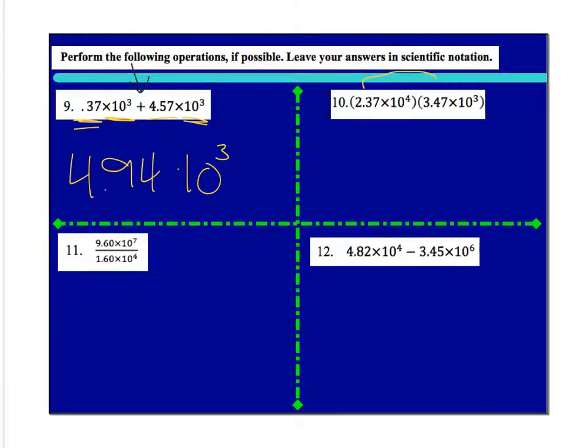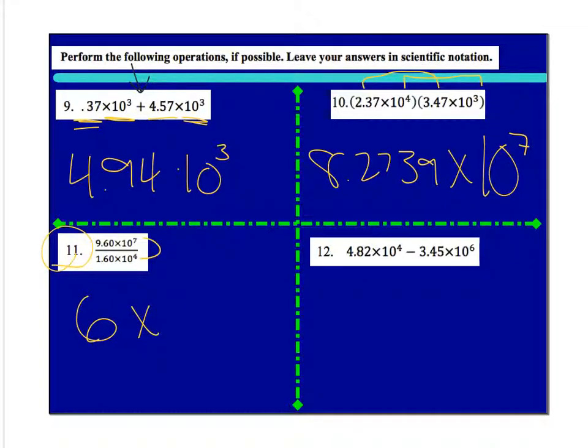Number 10. Remember, multiply the numbers. 2.37 times 3.47 is going to be 8.2239, and then add the exponents. So times 10 to the seventh. Here, 9.60 divided by 1.60, I'm on number 11. So I take 9.6 divided by 1.6 and that just gives me 6. But then I subtract the exponent. So that's going to give me 6 times 10 to the third.